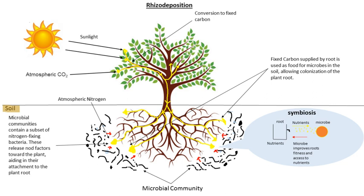Root microbiota affect plant host fitness and productivity in a variety of ways. Members of the root microbiome benefit from plant sugars or other carbon-rich molecules. Individual members of the root microbiome may behave differently in association with different plant hosts, or may change the nature of their interaction along the mutualist-parasite continuum within a single host as environmental conditions or host health change.